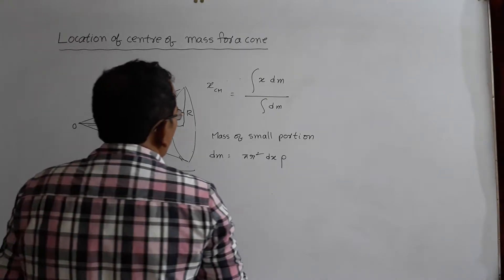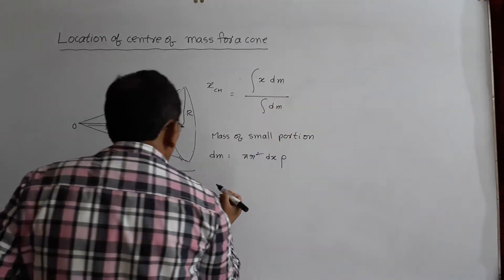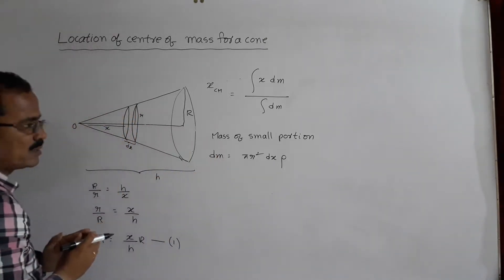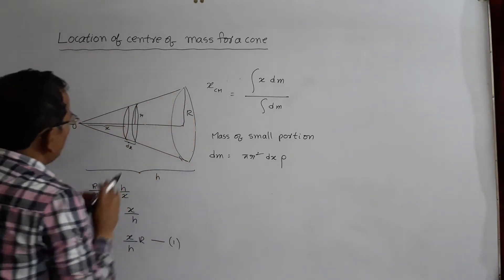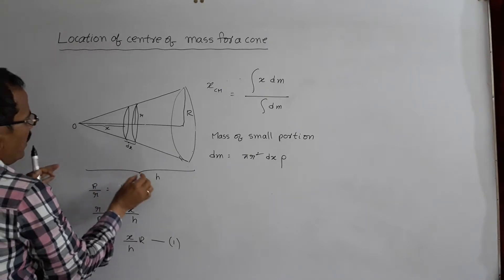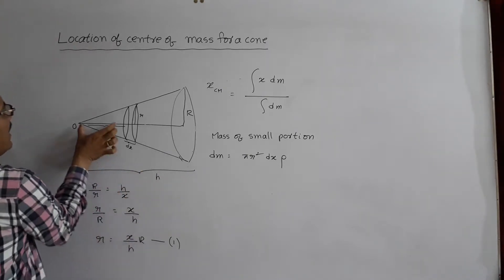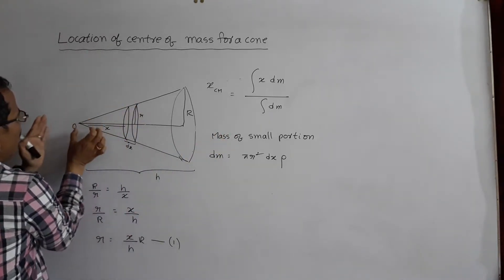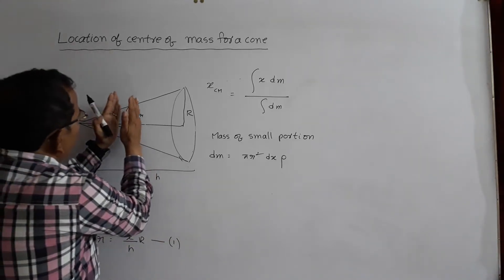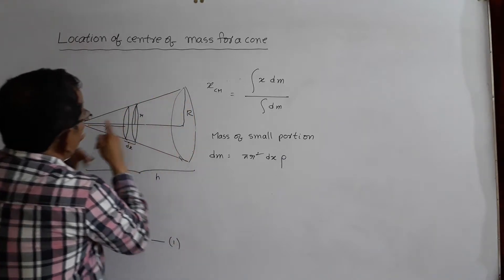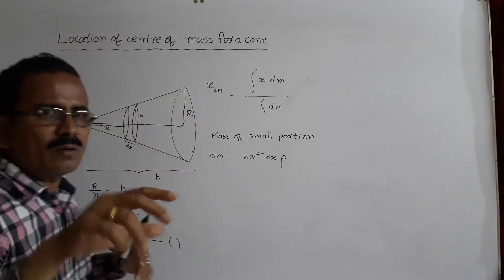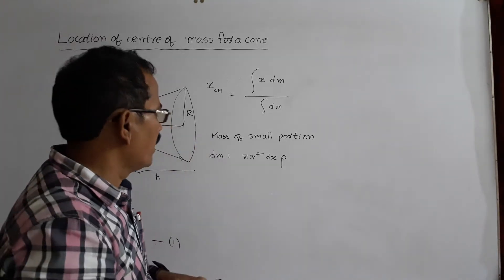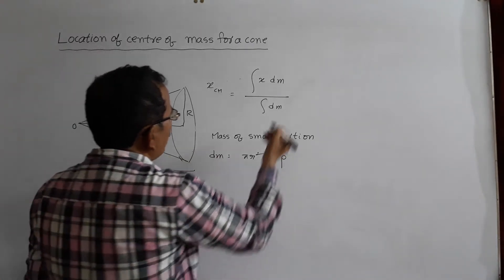Now I am going to apply this formula. You can take this type of small portion from x = 0 to x = H. If you take the small portion at the vertex, x = 0; at the base, x = H. So x varies between 0 and H.